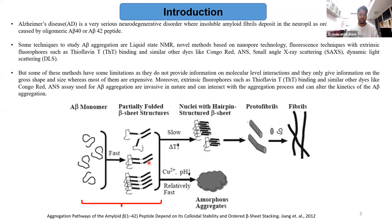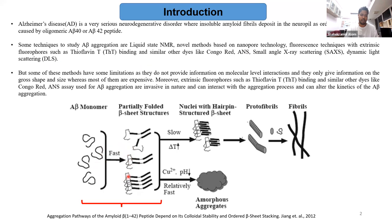This is the schematic of the aggregation pathway. The A-beta monomer has fast kinetics initially, which transforms into a partially folded beta-sheet structure. After that, there is a slow transition which forms protofibrils and then fibrils. There are various methods to characterize this aggregation pathway, such as extrinsic fluorophores like Thioflavin T, Congo Red, ANS, and dynamic light scattering. Here we are mainly focused on the early stages of aggregation, which is a very fast, rapid process that is difficult to characterize.